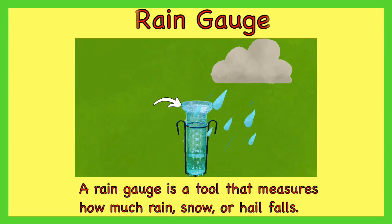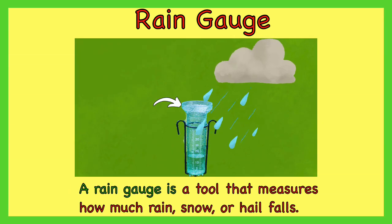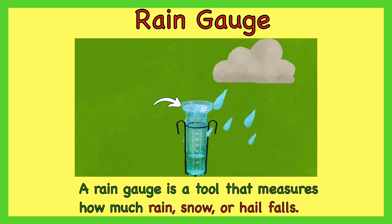Rain gauge. A rain gauge is a tool that measures how much rain, snow, or hail falls.